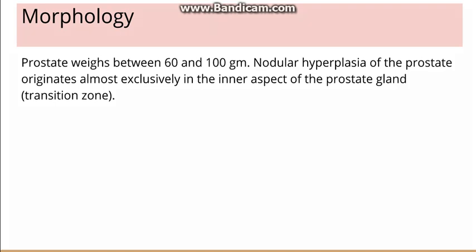Now we will discuss the morphology of BPH. The prostate in a normal adult weighs around 20 grams. However, in BPH its weight is around 60 to 100 grams. The zone which is affected is the innermost zone, which is the transitional zone.